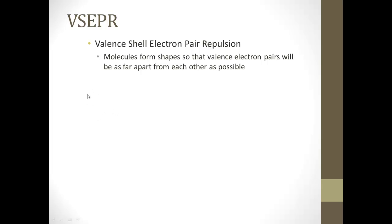Let's say we did H2O — you have an oxygen joined to two hydrogens, and there's two pairs of electrons. Something to always keep in mind is that even though we draw these on paper in two dimensions, in reality all of these things are in three dimensions. Here, these electrons are only about 90 degrees apart from each other, and they really don't want to be that close together.